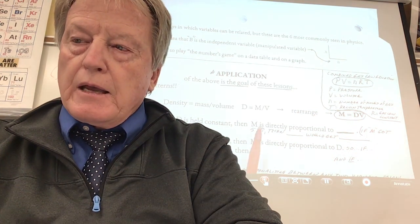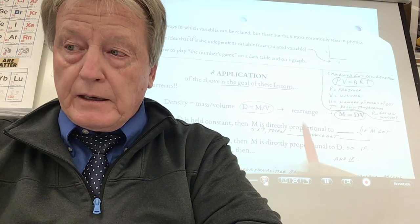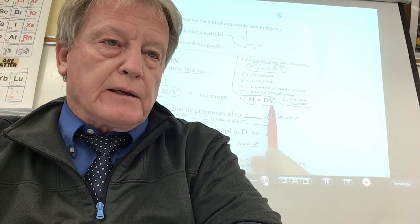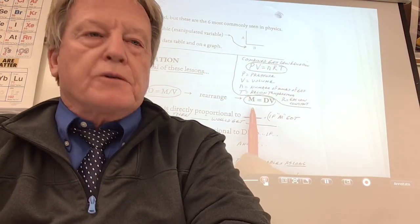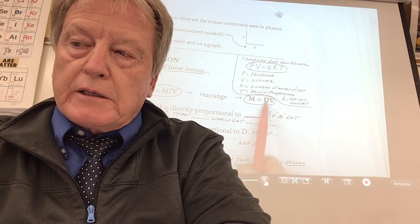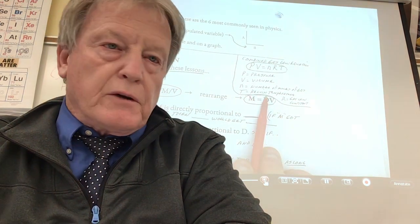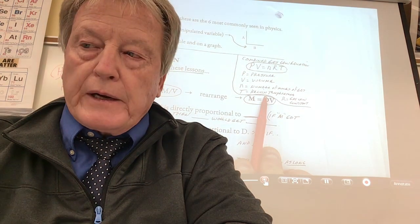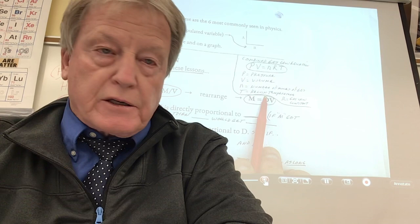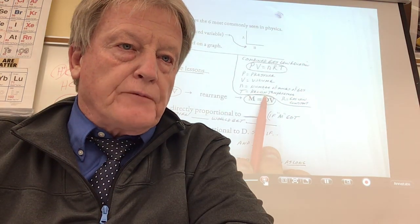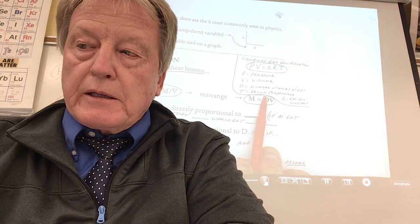Without doing any experiments — somebody else has already done them — here's what I can tell by looking at the equation. If density is held constant, M and V are on opposite sides of the equal sign, so M and V are directly proportional to each other. If you had something whose density did not change, like copper, and the mass got five times greater, what would happen to the volume? It would get five times greater — that's direct proportionality. What if V is held constant? Mass and density are also directly proportional.